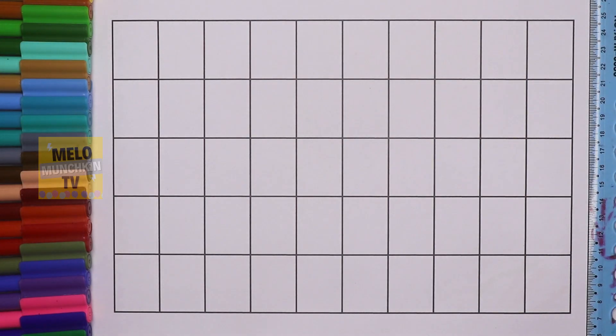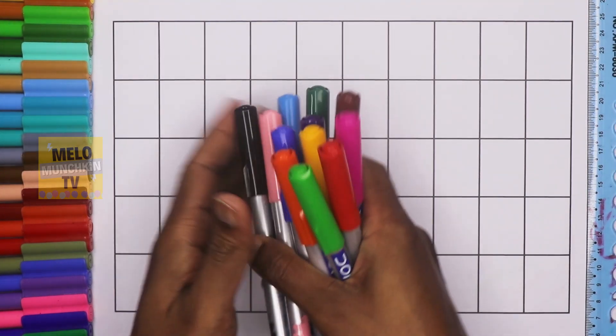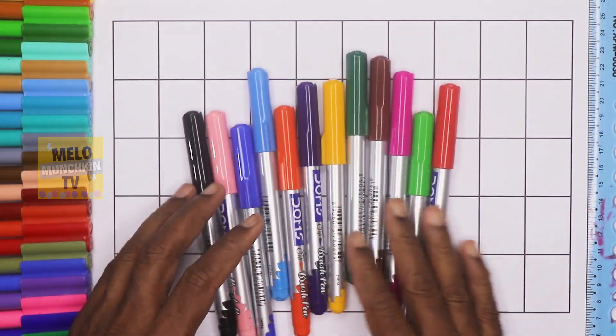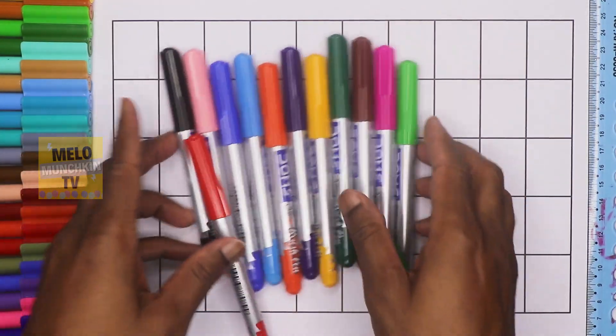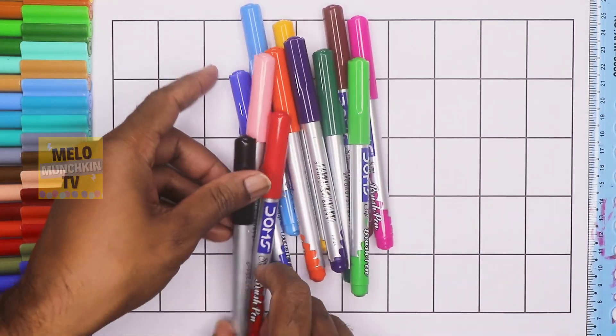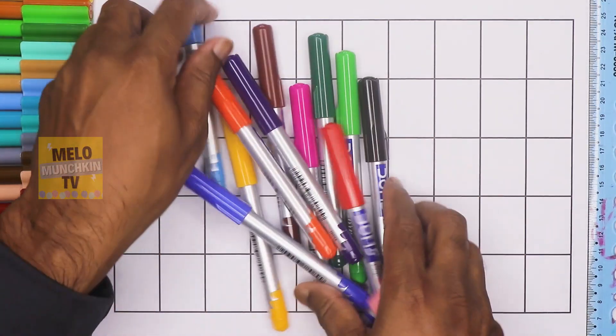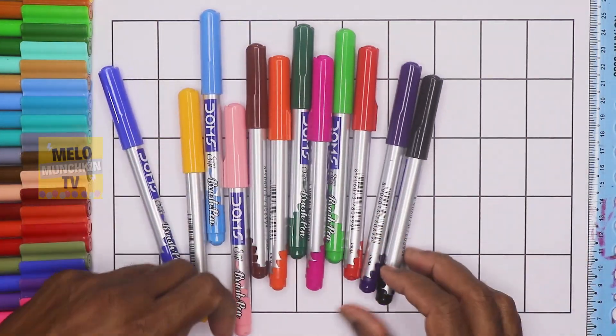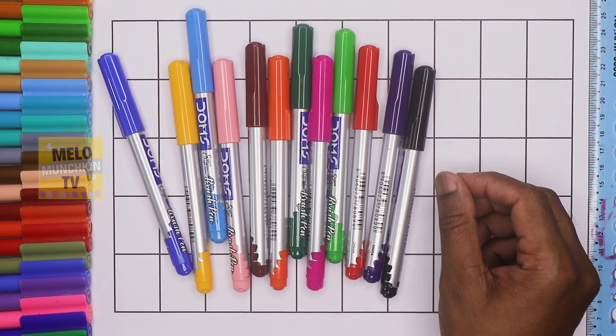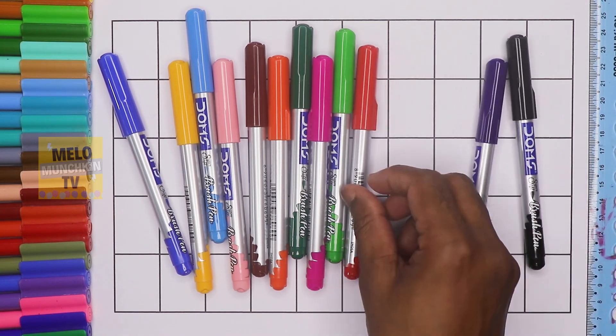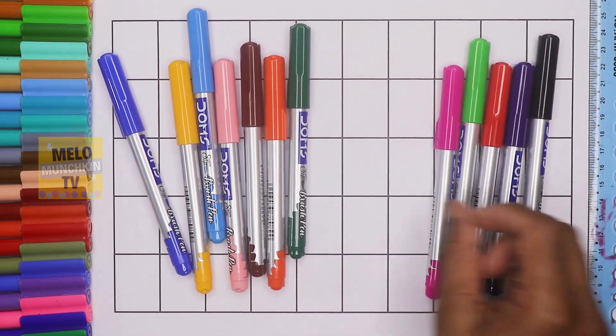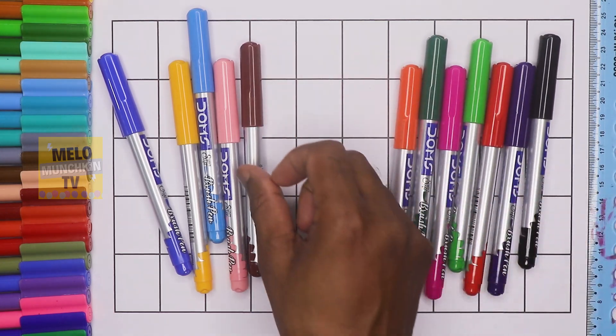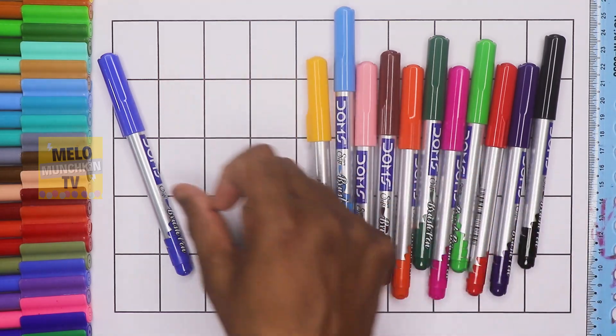Hello kids, today we will learn numbers from 1 to 50, but before that we will learn colors. So there are how many colors? Let's count first: 1, 2, 3, 4, 5, 6, 7, 8, 9, 10, 11, and 12.